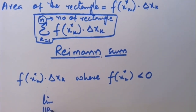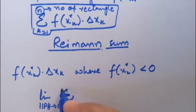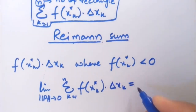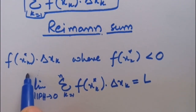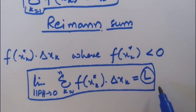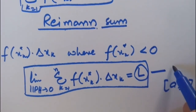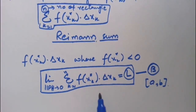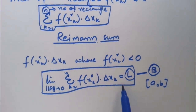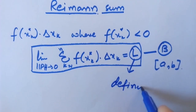We can write it mathematically as: the limit as the norm tends to 0 of the summation from k=1 to n of f(x*k)·Δxk is equal to L. In this condition, L is the definite integral of a function f on the interval [a, b]. If the limit exists, then the function f is said to be integrable on the interval, and L is the definite integral.